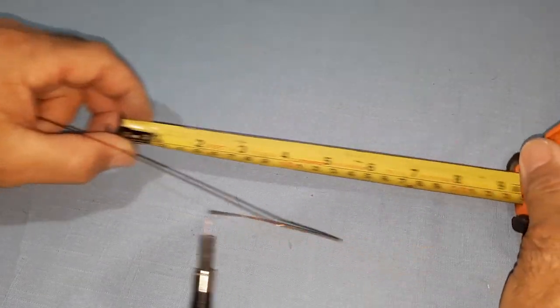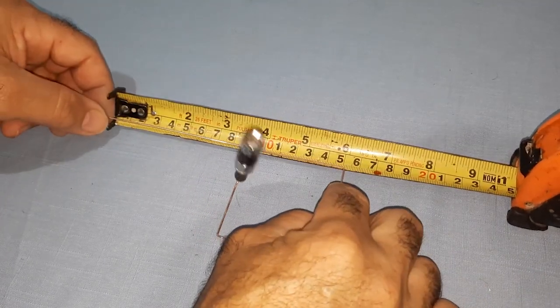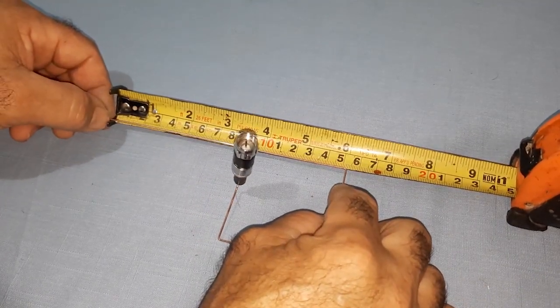Mark 15.2 cm and bend the conductor. Measure 15.2 cm from the last bend and mark. Then bend the conductor at that point.